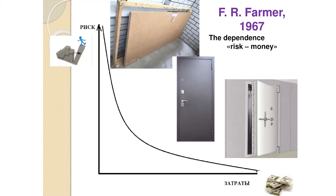This relationship between risk and money was noticed in 1967 by scientist Philip Farmer. For example, if you buy a thin wooden door for your apartment, security is low. A thin iron door provides more security at higher cost. With a thick iron door, video camera, or guard, your security level increases as much as you are willing to pay. The money in your bank account determines the level of security and the level of risk of theft.